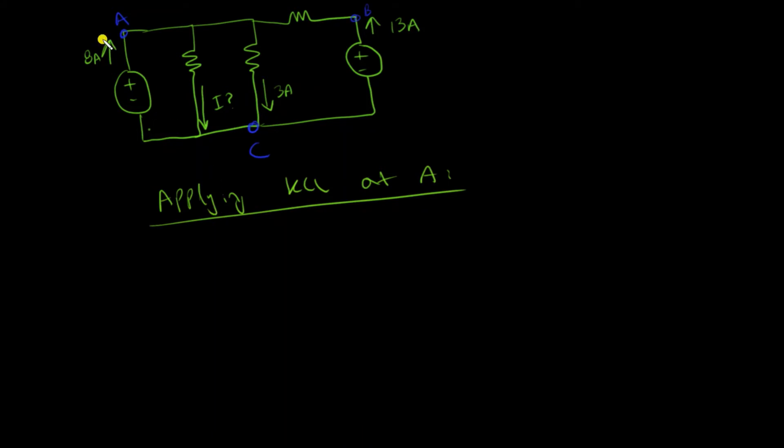Starting with the algebraic sums from the left side: there's 8 amps entering node A, plus 8. There's I leaving node A so minus I. There's 3 amps leaving node A so minus 3, and there's 13 amps entering node A so plus 13.